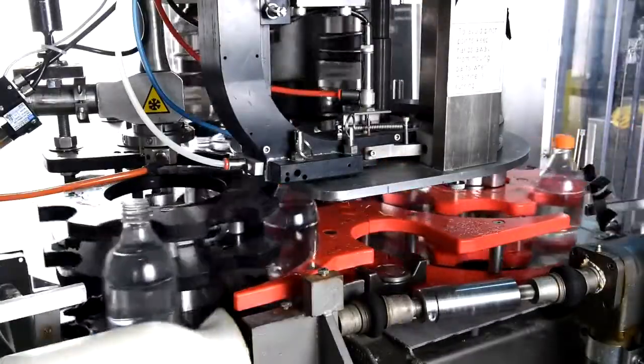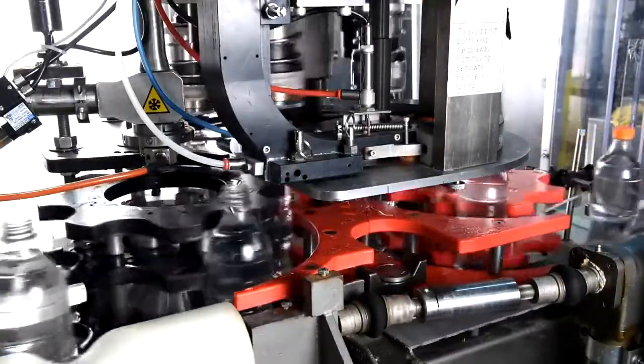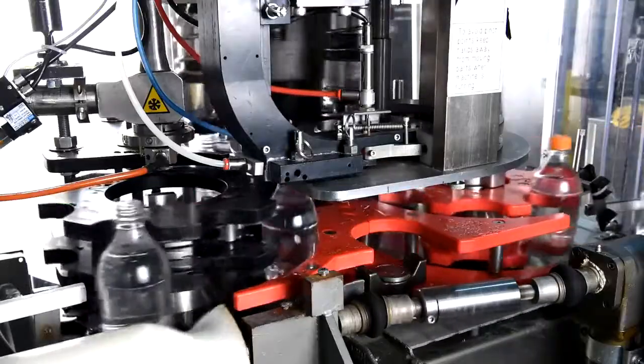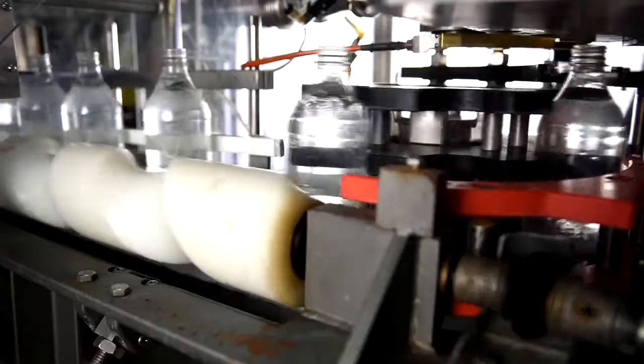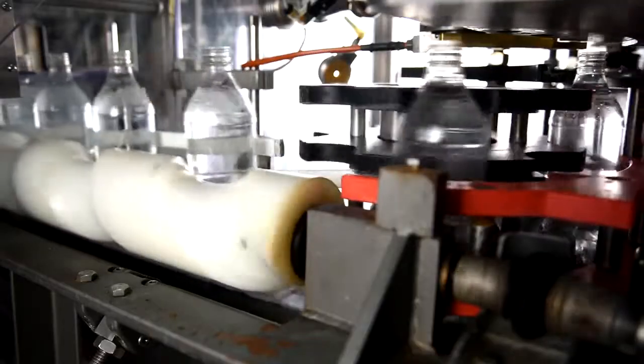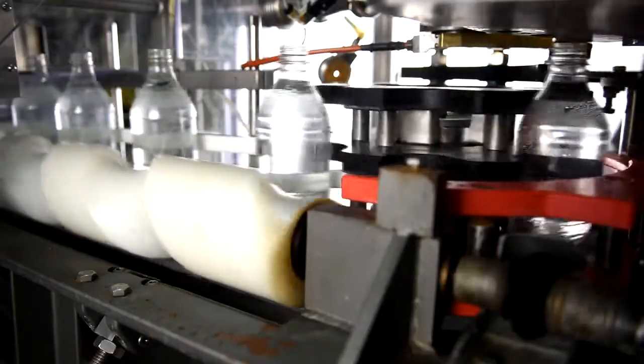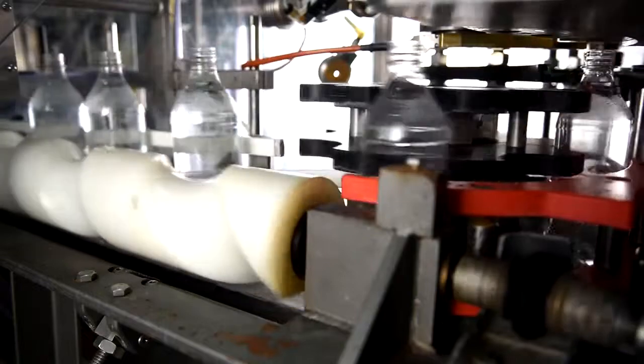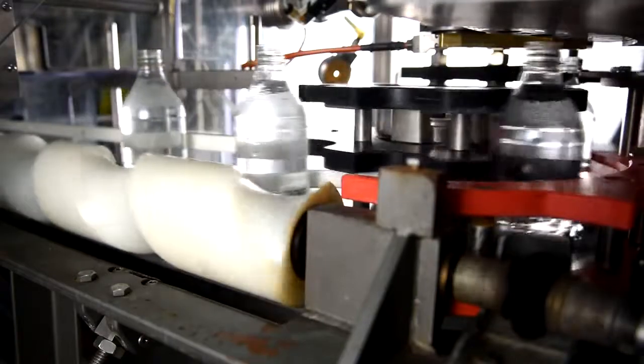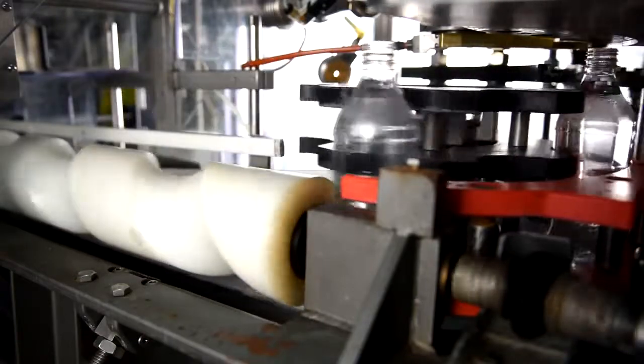Synchronized with the caps feeding into the capping chucks, filled bottles are also entering the capper. The exact configuration of the bottle infeed will vary. This freestanding capper uses a feed screw to space the bottles out so they match the pitch of the capping heads in the capper. A star wheel captures the bottles and feeds them into the capping turret.